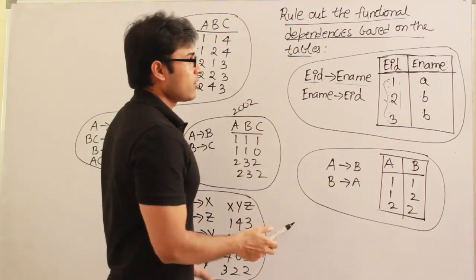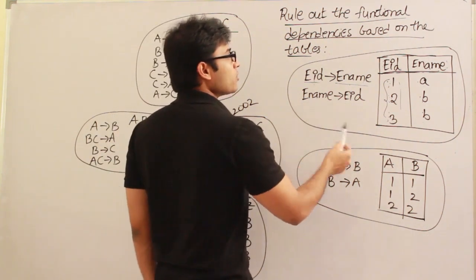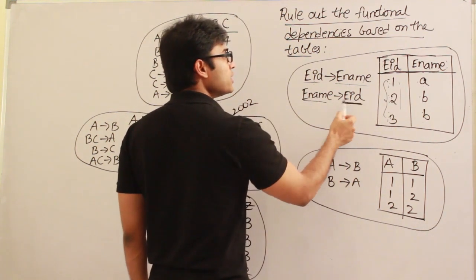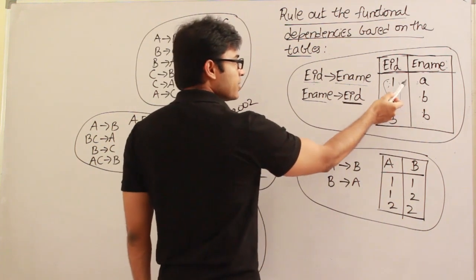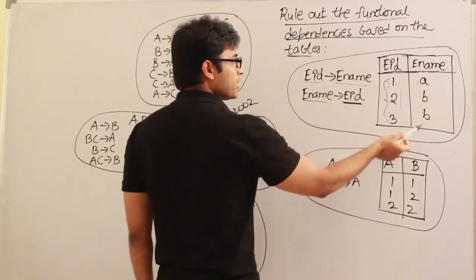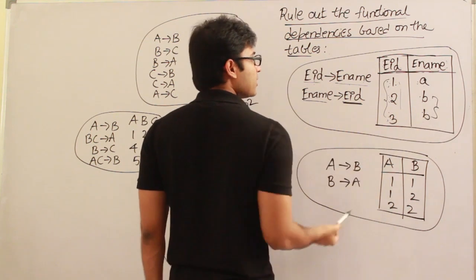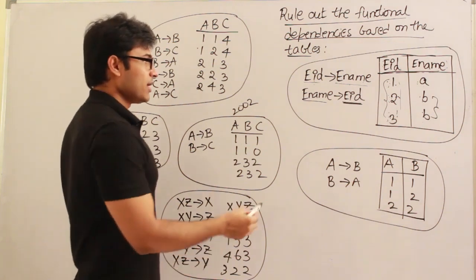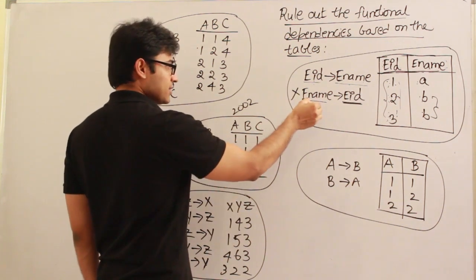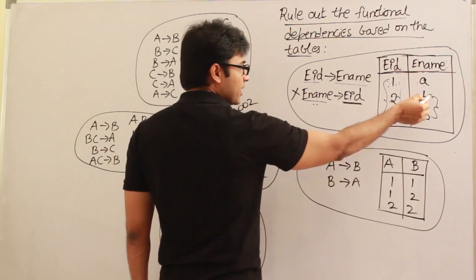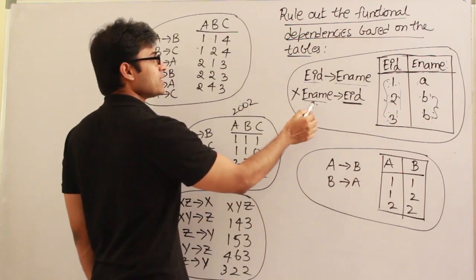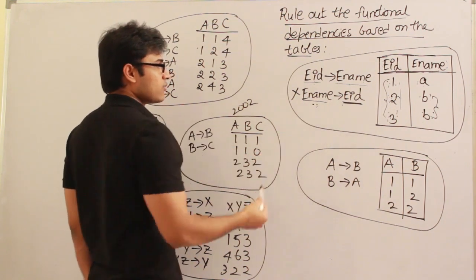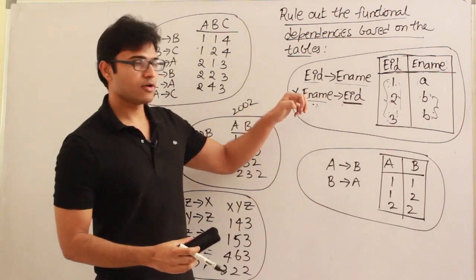Now what about EName→EID? Given a value of EName, will you be able to say a unique EID? If EName is A, I can say EID is 1. But if EName is B, I will not be able to say a unique EID. Therefore this one doesn't exist. If this functional dependency had existed, you would never get this case — so at the first place this functional dependency would not have been existing.